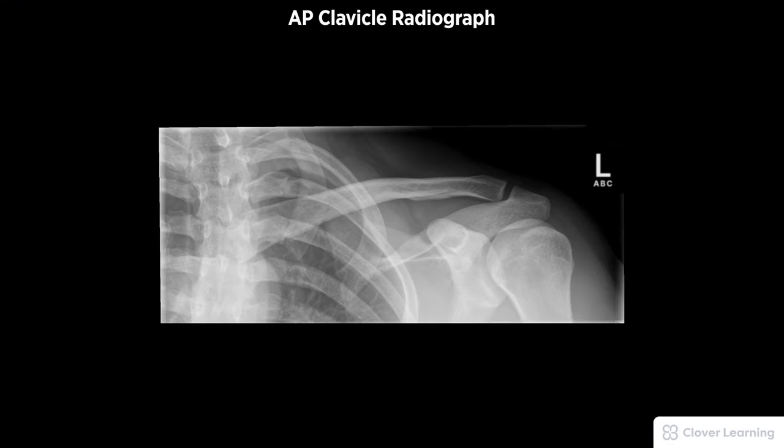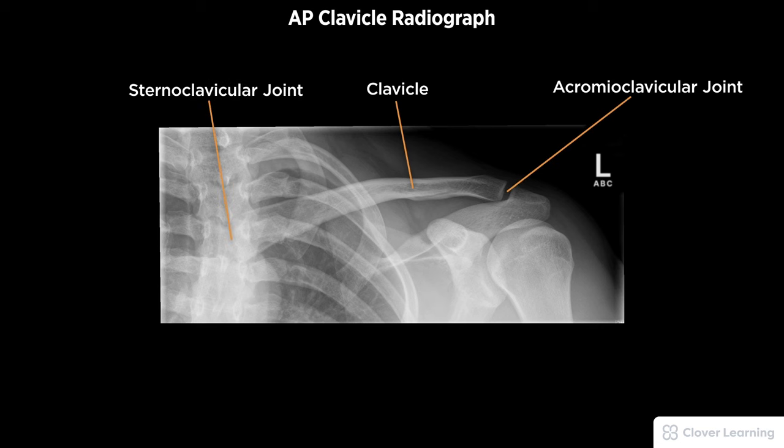A diagnostic AP clavicle radiograph must be free of motion and rotation. Demonstrated anatomy must include the entire clavicle, including the acromioclavicular and sternoclavicular joints, with proper visualization of bony detail.